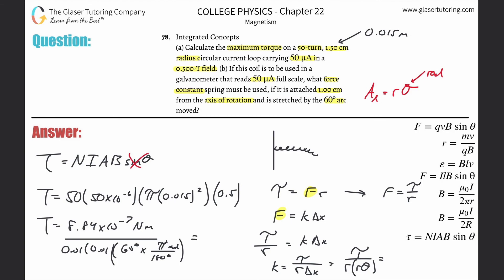When we do this it works out to torque divided by 0.01² × (60π/180). We get a value of about 8.44×10^-3, and that's in terms of newtons per meter. That is the units for force constant.